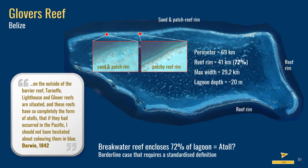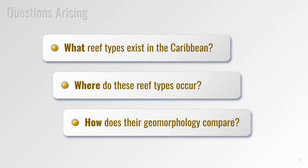Darwin didn't know what to think either. He stated that the Belize reefs have so completely the form of atolls that if they had occurred in the Pacific I should not have hesitated about colouring them blue. This quote reveals his confirmation bias — he implies that atolls and barriers can't form in the Caribbean because of the general lack of subsidence, essentially excluding things that don't fit his perceived theory. But despite his bias, Darwin was right that significant uncertainty exists about the classification of Caribbean atolls, and the same goes for barrier reefs and fringing reefs, because significant differences do exist between Caribbean reef types and their Indo-Pacific counterparts.